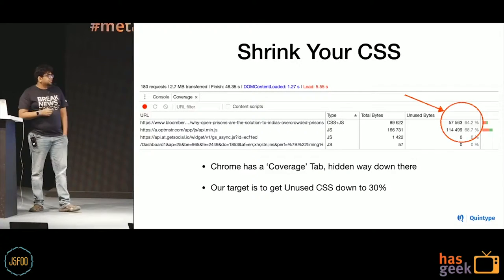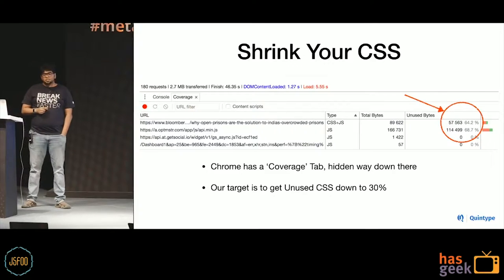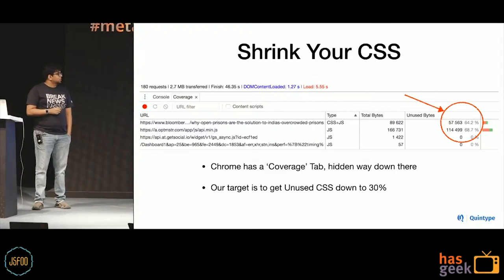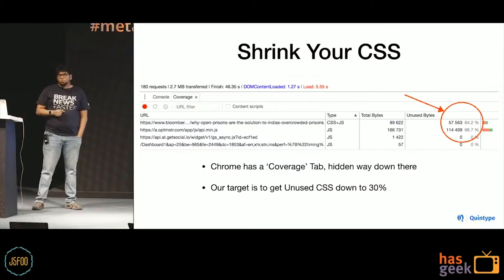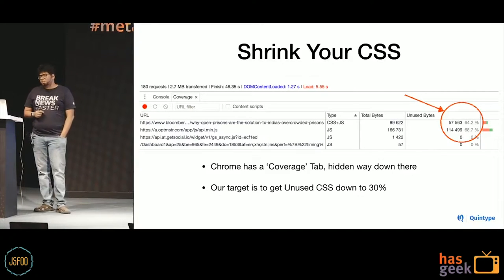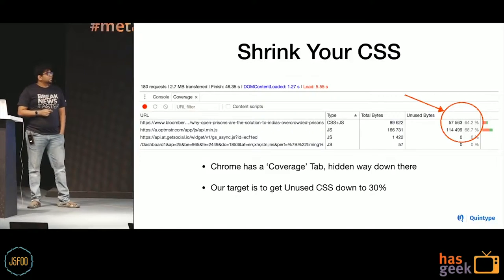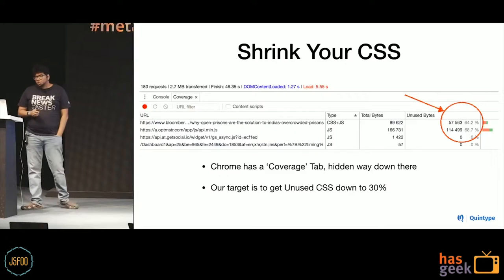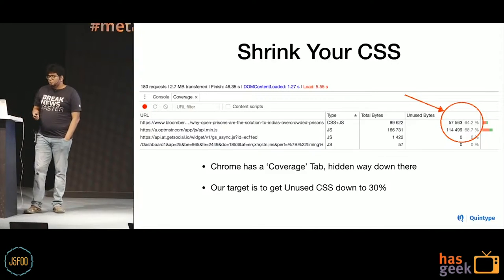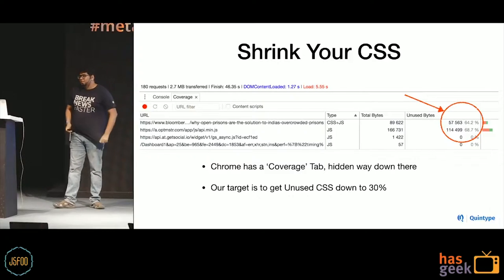A hidden feature in Chrome is that Chrome has added a coverage tab - about three months ago - which actually tells you what percentage of your CSS and JavaScript is actually being used. You can see over there it's about 64% unused on one of my sites. Our internal target is to get it down to about 30%, and then we'll know it's not worth optimizing further at that point.